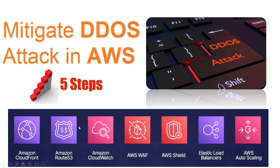These are the AWS services through which you can mitigate DDoS attacks: CloudFront, Route 53, Amazon CloudWatch, AWS Web Application Firewall, AWS Shield, load balancers, and AWS Auto Scale.